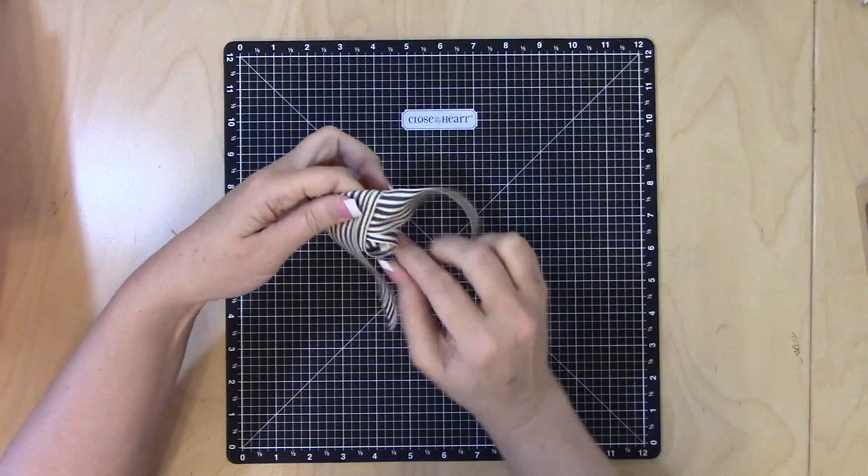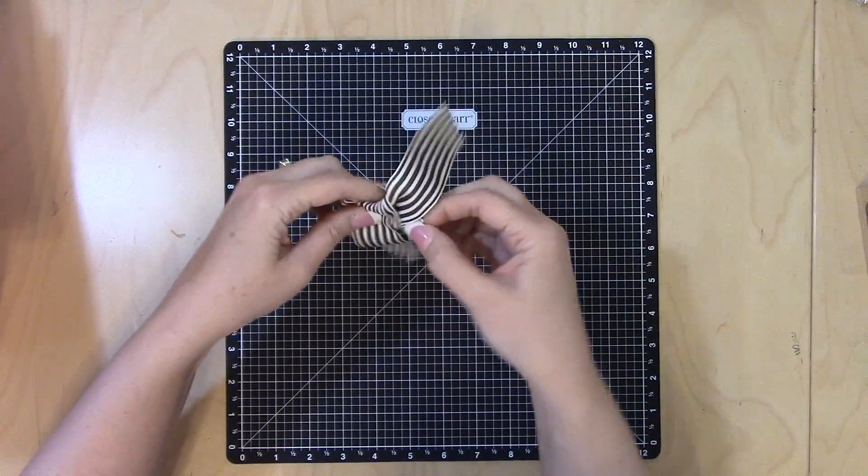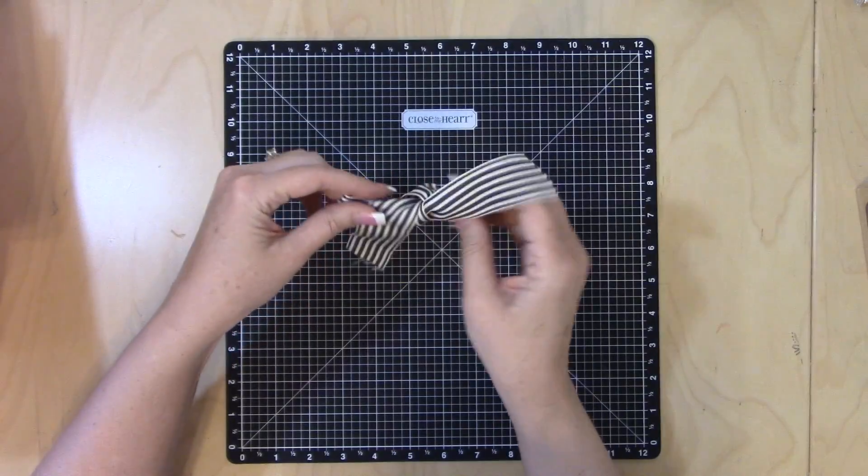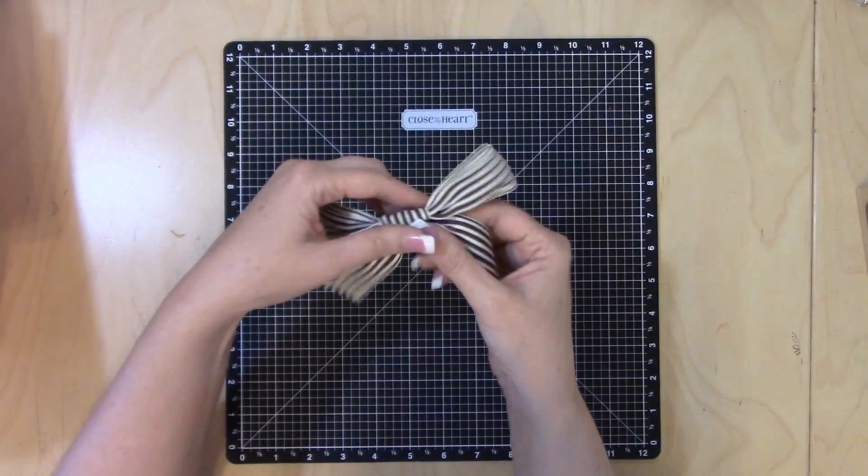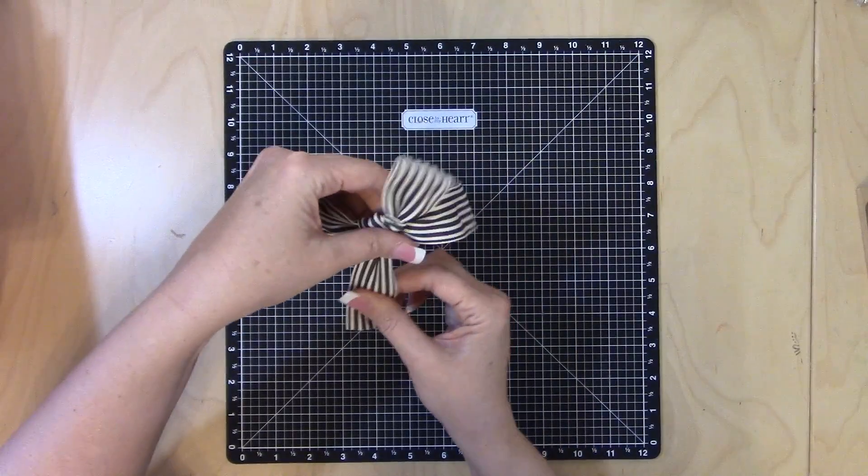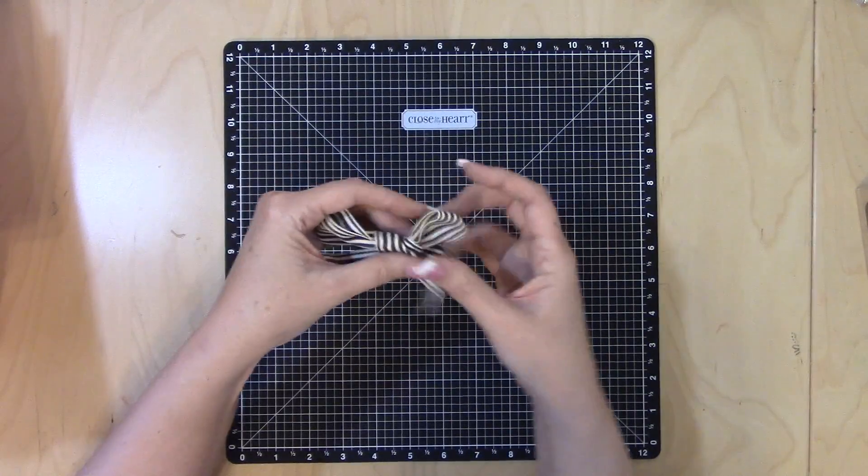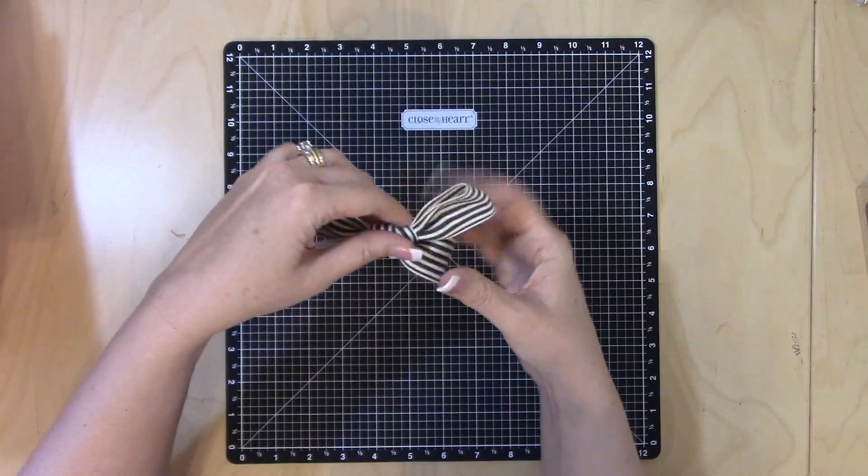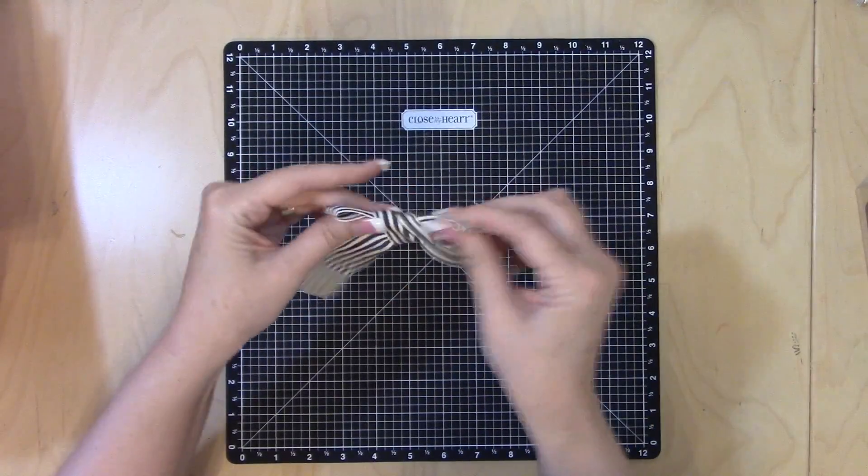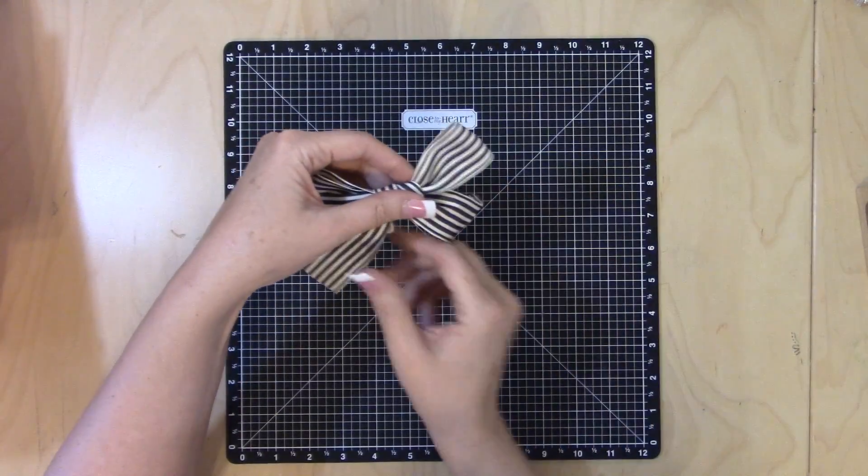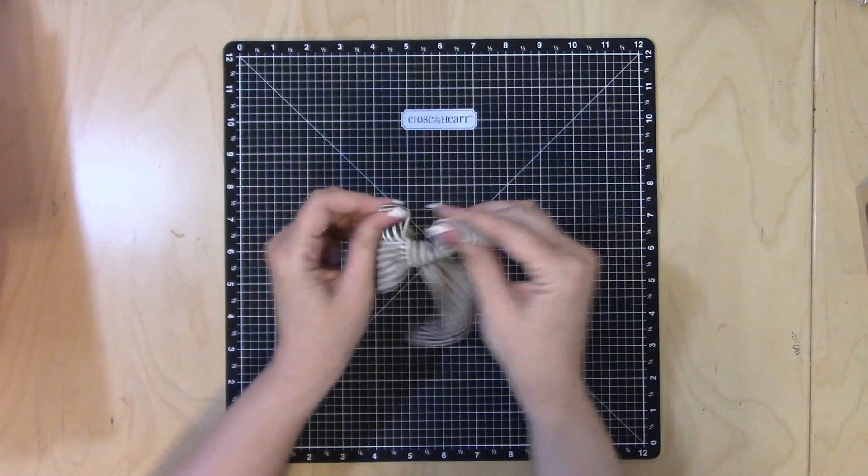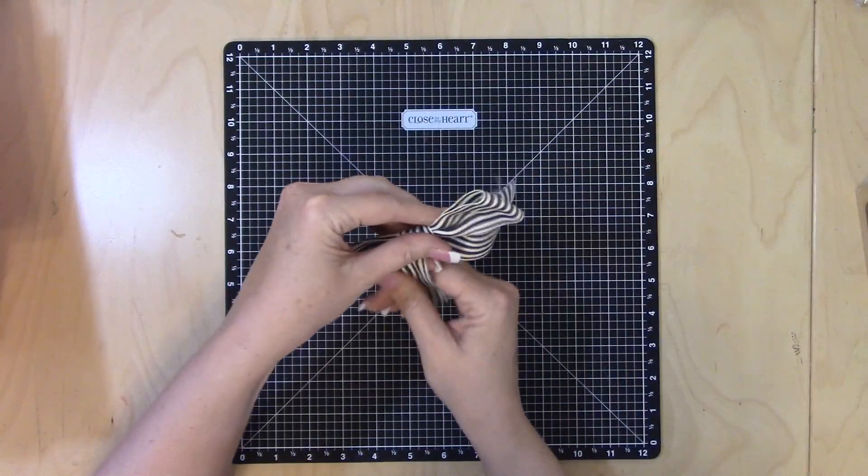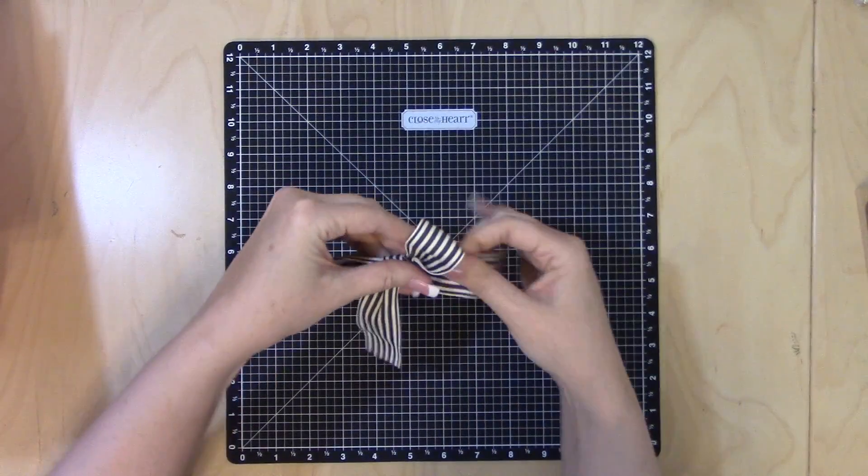that, right? Then I just start fiddling with it a little bit to get it to look better. As you pull, more of the bow comes through. I don't want this side this long, so I keep maneuvering with it. Pull it tight, try to make that come out a little bit.